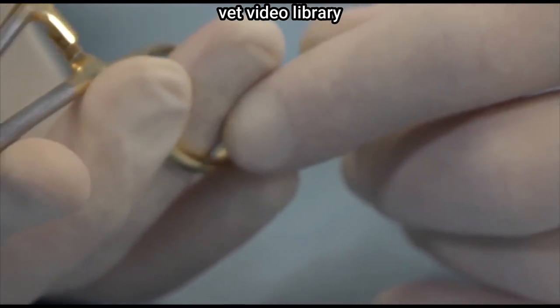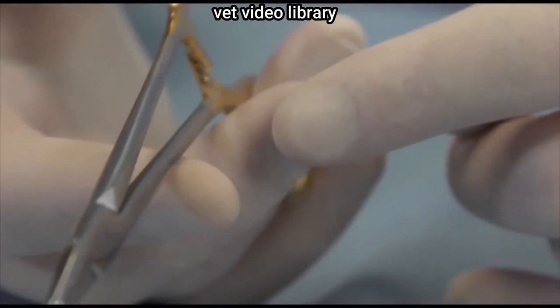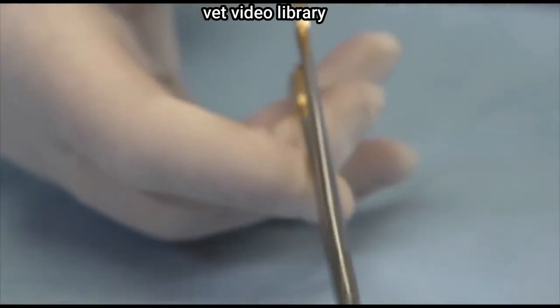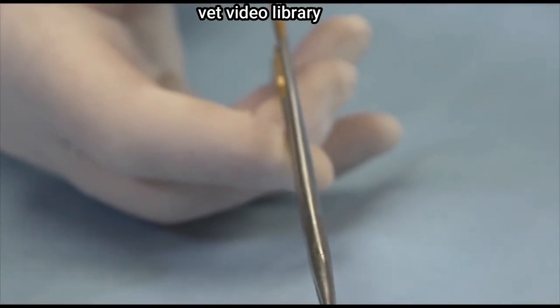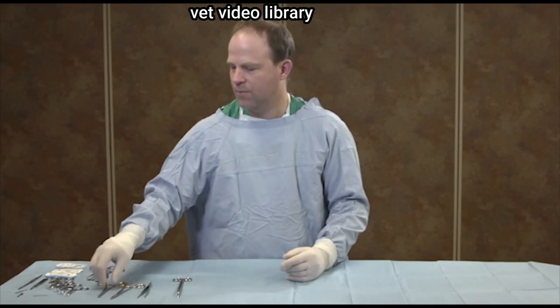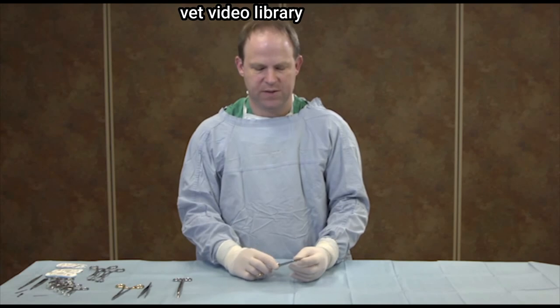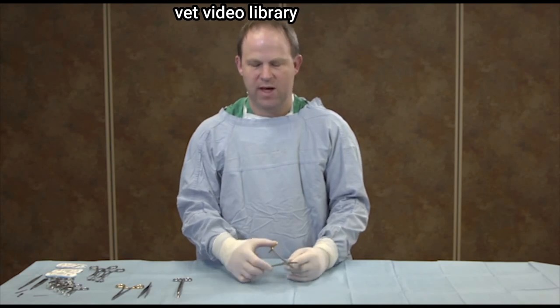It's held with your thumb and ring finger. And your middle and index finger are used to control the needle holder. This is an Olsen-Hager needle holder because it's a combination needle holder and scissors.